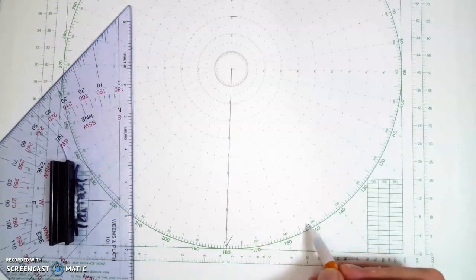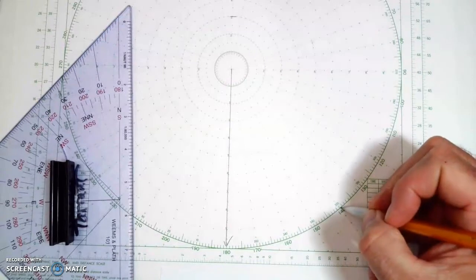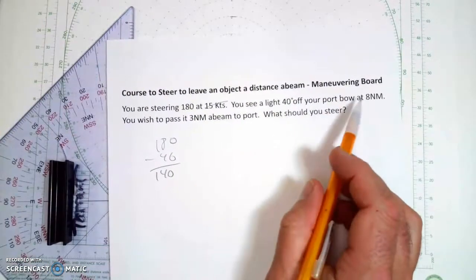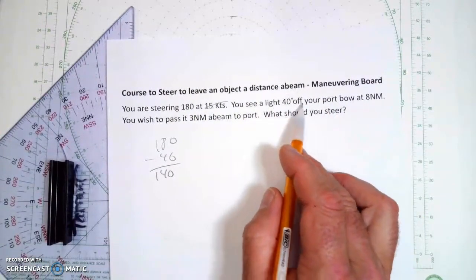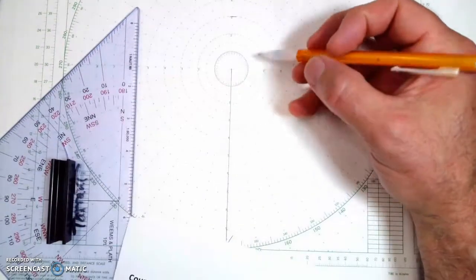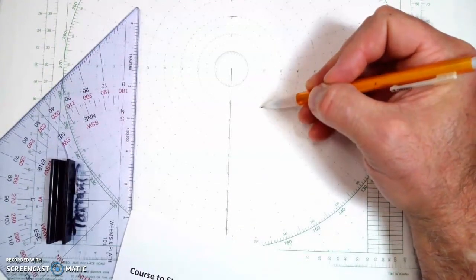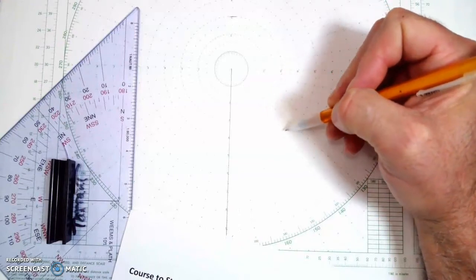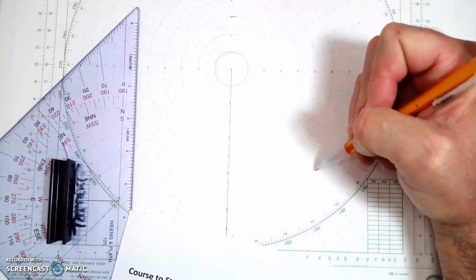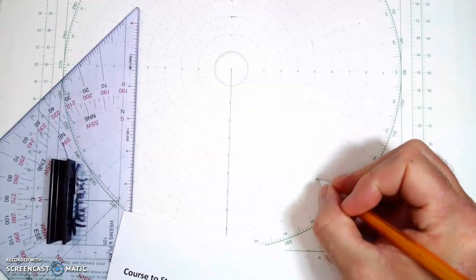10, 20, 30, 40. So now, the object is 8 miles, 40 degrees off our port bow. So I'm just going to say that this is 1 mile, 2 miles, 3 miles, 4 miles, 5 miles, 6 miles, 7 miles, 8 miles. So that object, that light.